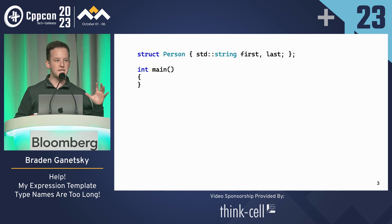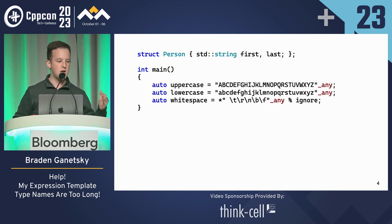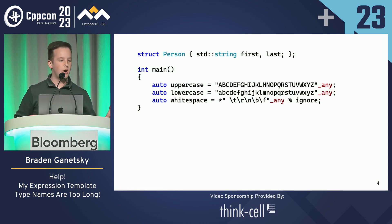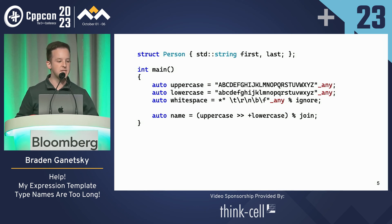I want to parse someone's name into a person that has a first and last name. I have three parsers: an uppercase parser that parses any uppercase letter, a lowercase parser that parses any lowercase letter, and a whitespace parser that parses zero or more whitespace characters and ignores the value. Let's make another parser called name — let's assume all names are one uppercase letter followed by one or more lowercase letters — and collapse them into a string view with join.